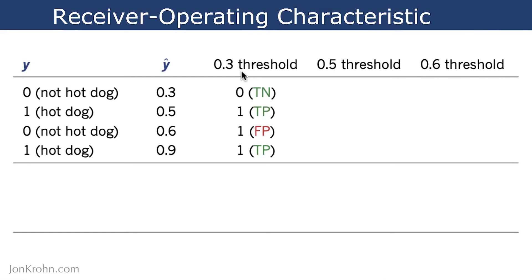So at that threshold, we consider everything below 0.3, or at 0.3 and below, to be a classification of 0. Whereas anything above 0.3, we consider that to be a prediction that a hot dog is there. And then we work through each of those scenarios and determine whether that is correct or not.